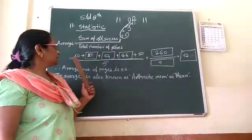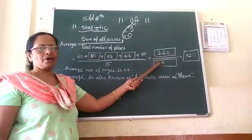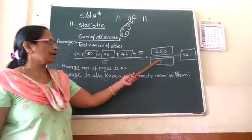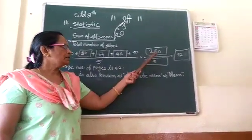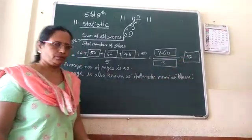Average means here, the addition of this is 260 and we divide it by 5, because these are 5 numbers. 260 divided by 5, we get 52.